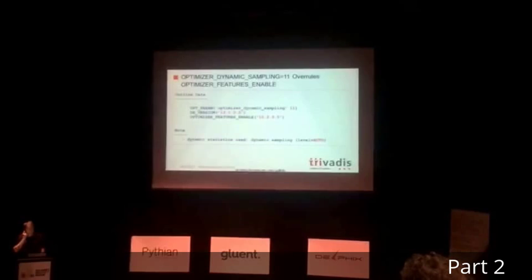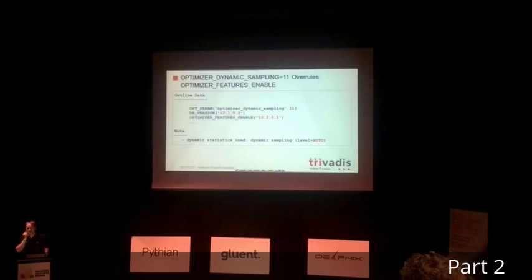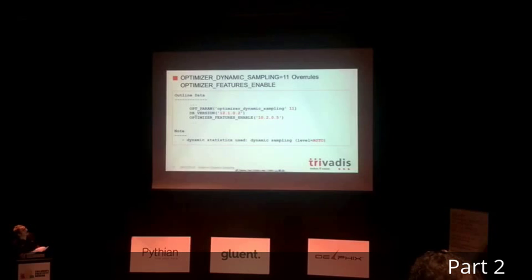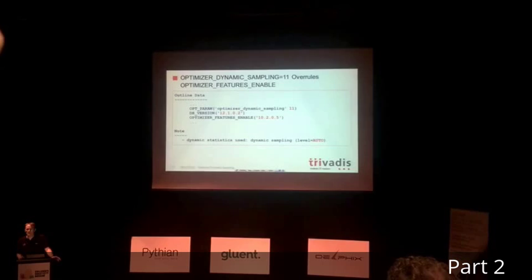We will see in a moment that there are other ways to activate it. Another important thing to know: even though you set optimizer features enable to an older release — for example, 10.2.0.5 — it doesn't mean that adaptive dynamic sampling is disabled. It's a bit strange, because from one side I asked Oracle to use the old optimizer, but at the same time, as you can see in this outline data, it used adaptive dynamic sampling. The feature is not deactivated if you set an old version of the optimizer — it doesn't overrule the setting.